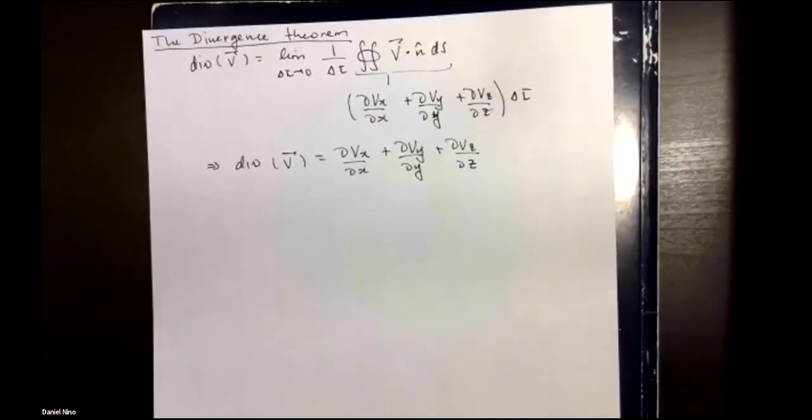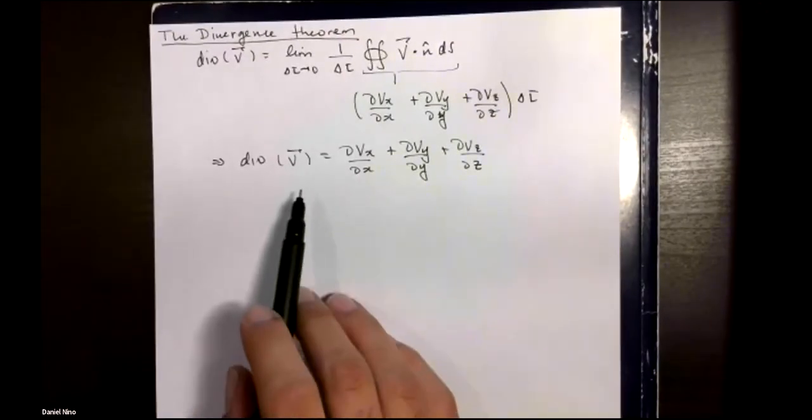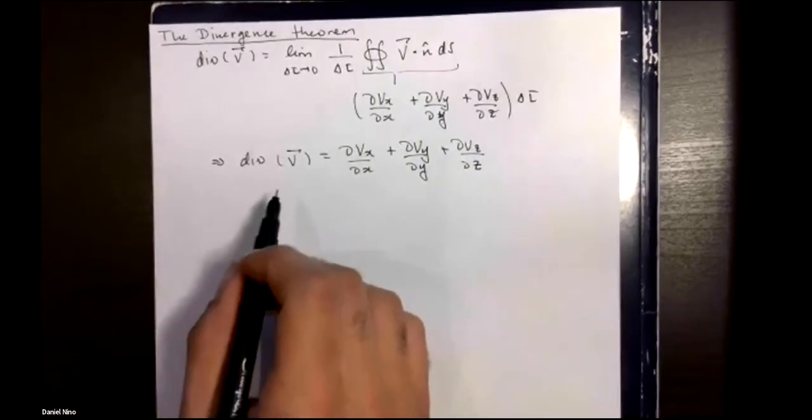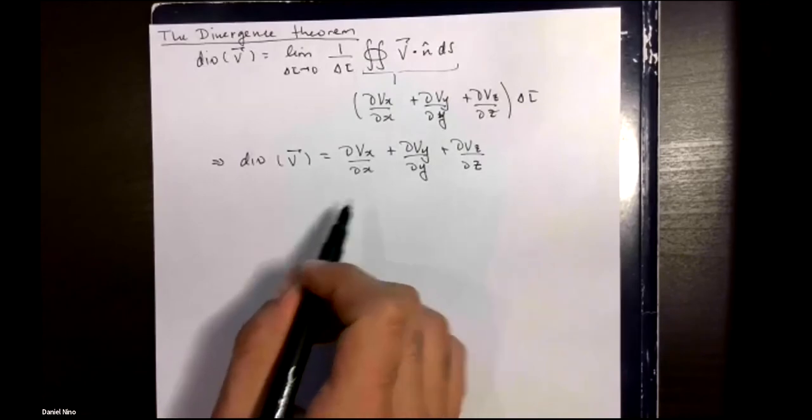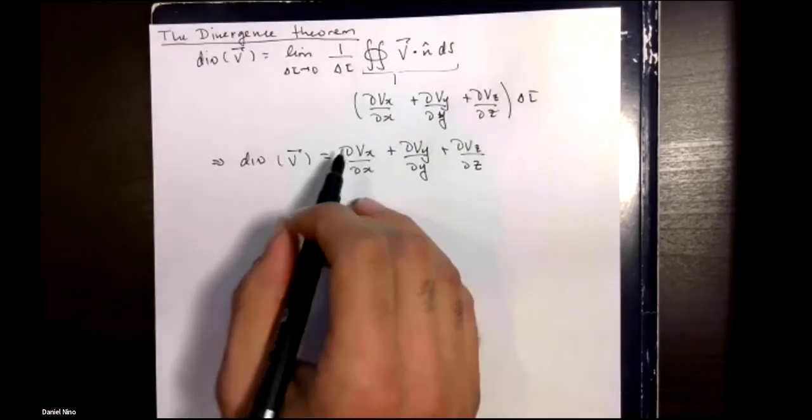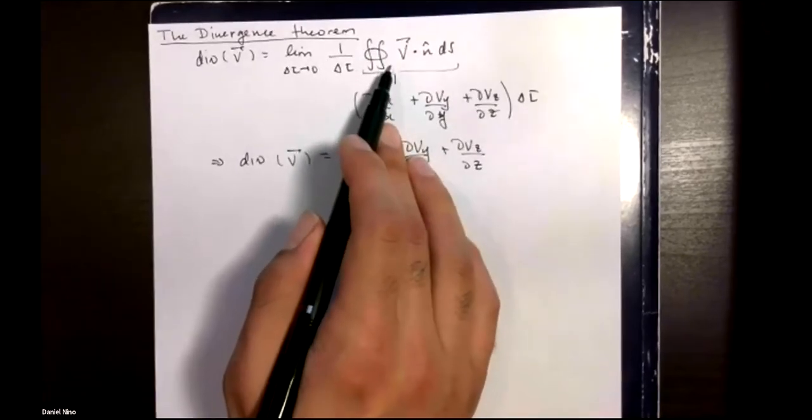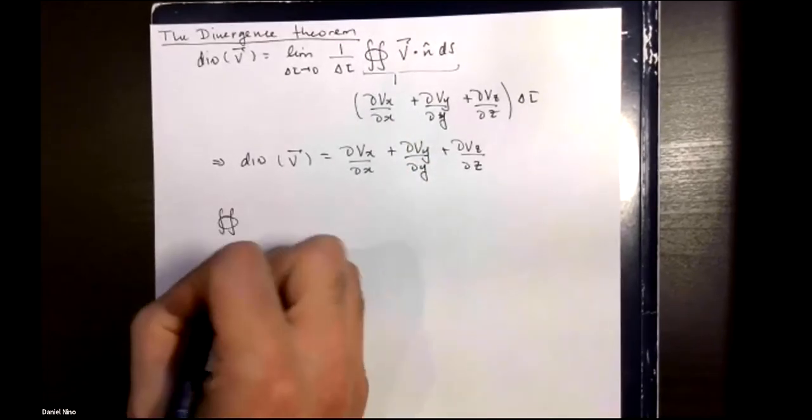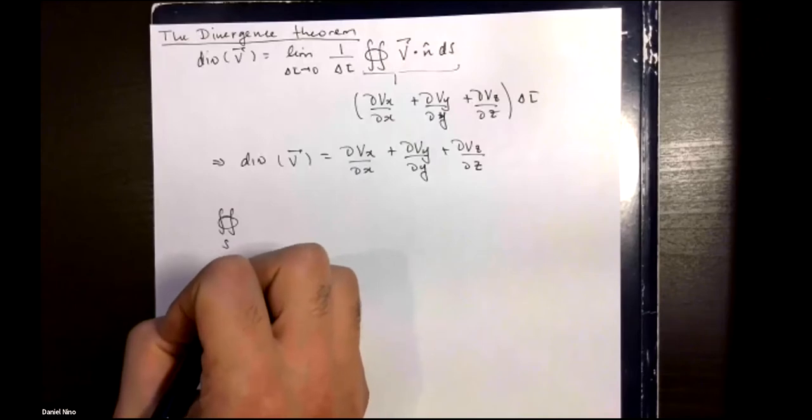Now to return to this idea of the divergence theorem. Another way of stating this using the second part of our definition is that the surface integral over the entire surface enclosing a volume.